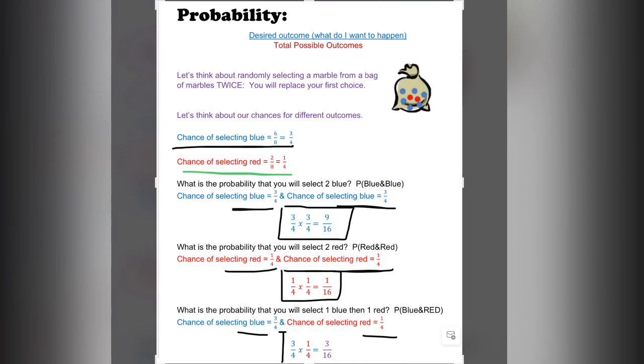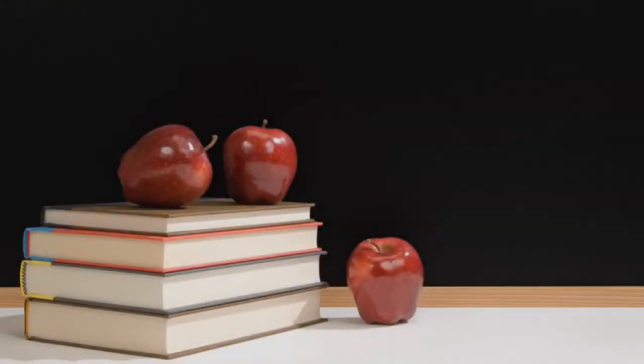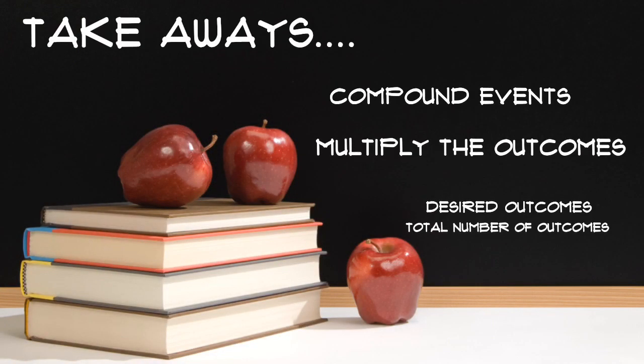You can see, you're most likely to get blue and blue. Then there's a decent chance of getting blue and red. Not a very good chance of getting red and red. Remember that you replace it, so it goes back to the same outcomes. Today's takeaway for compound events: remember to multiply the outcomes.